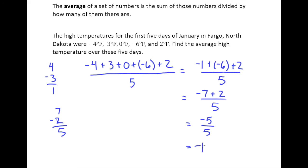And so of course this is an application problem so we label it. So the average is negative 1 degree Fahrenheit. So this kind of gives us a summary of what's going on in these first five days of January in that, on average, the temperature is about 1 degree below zero.